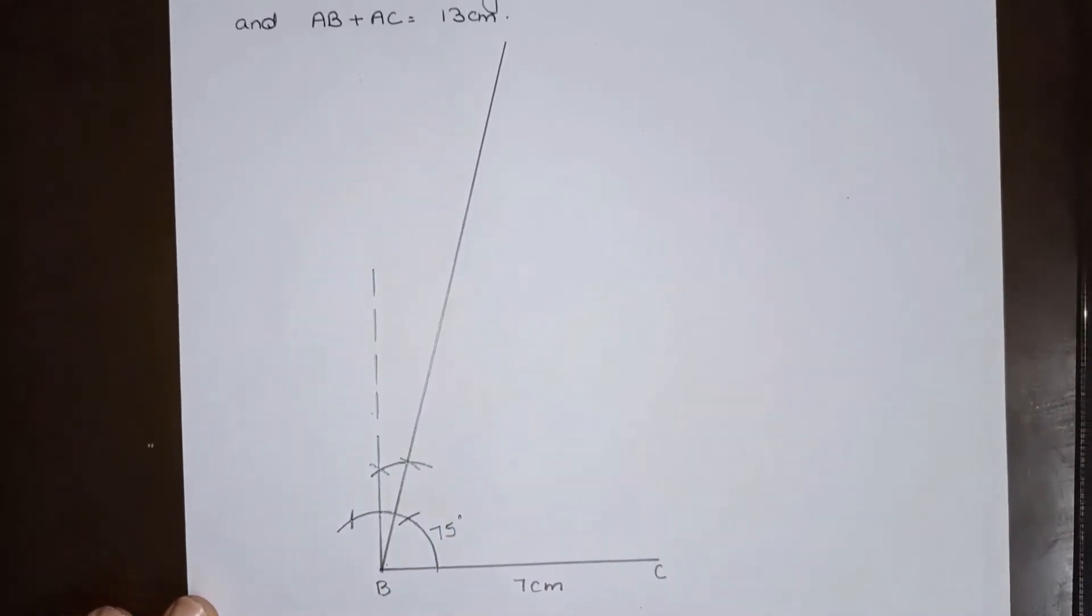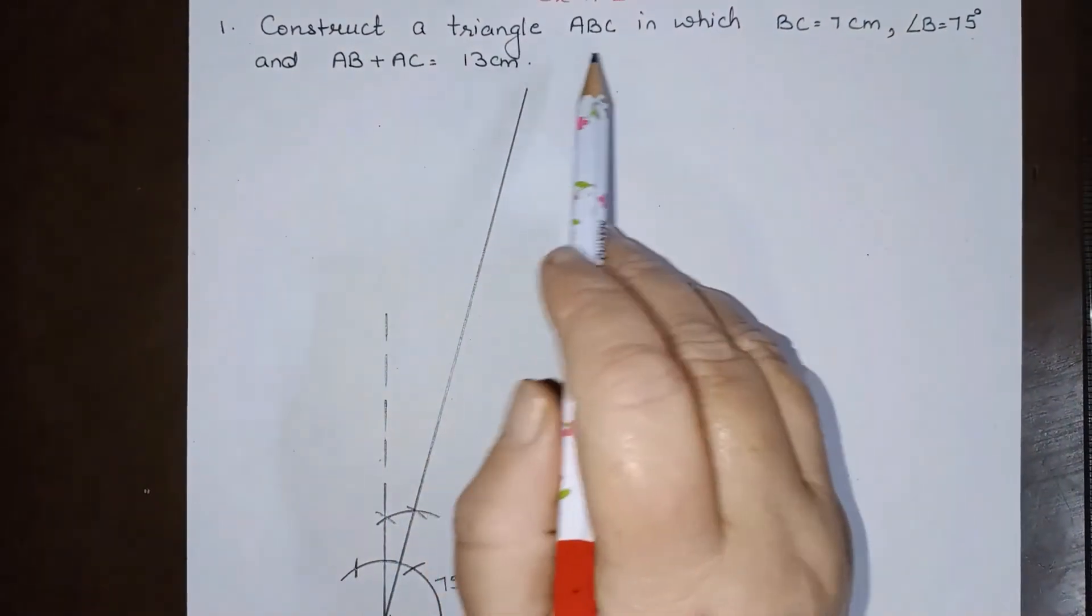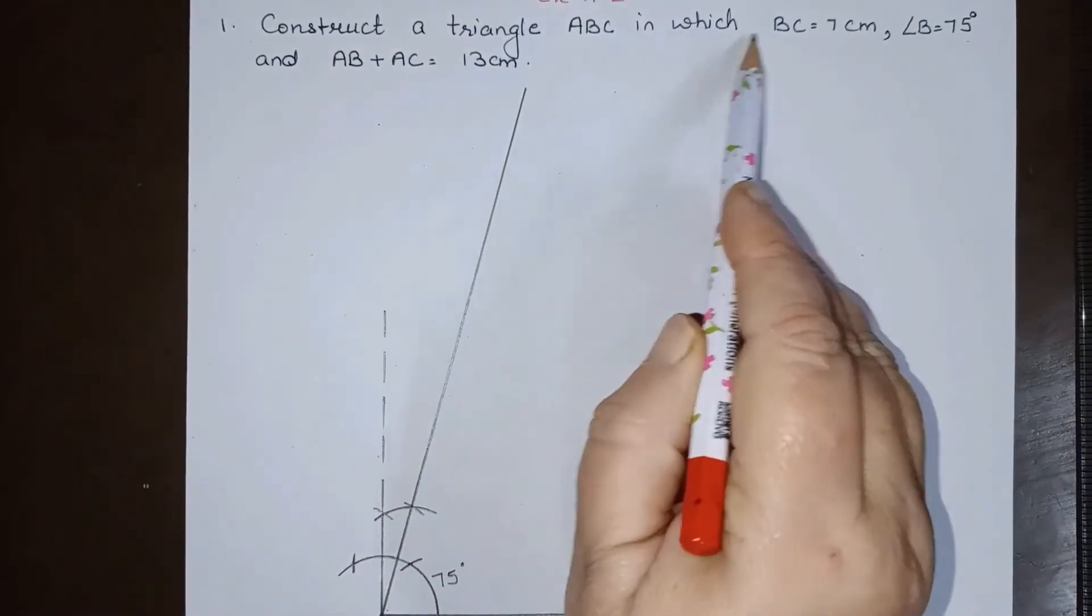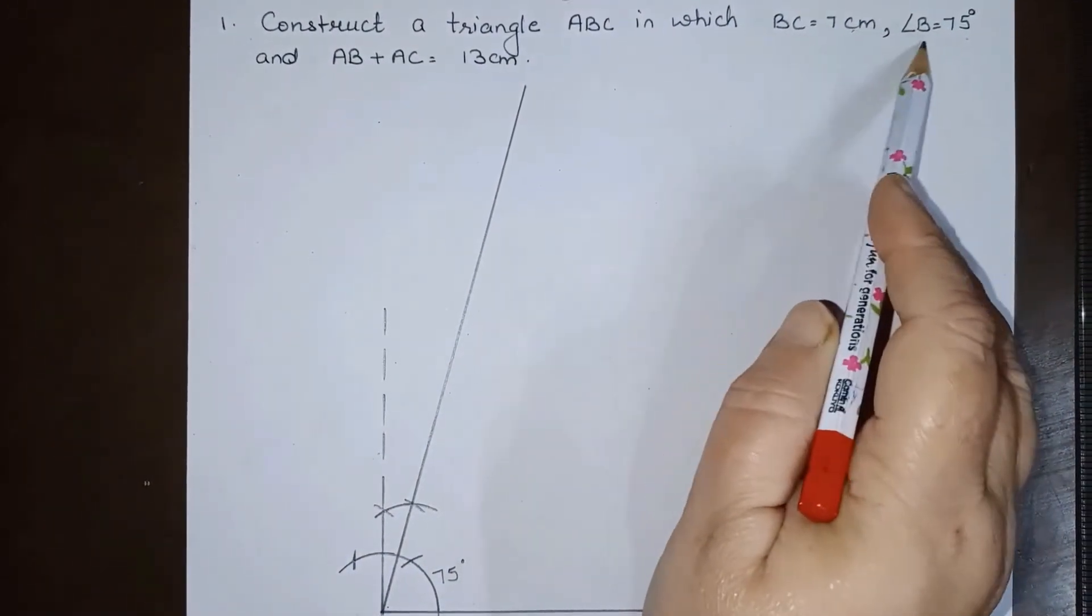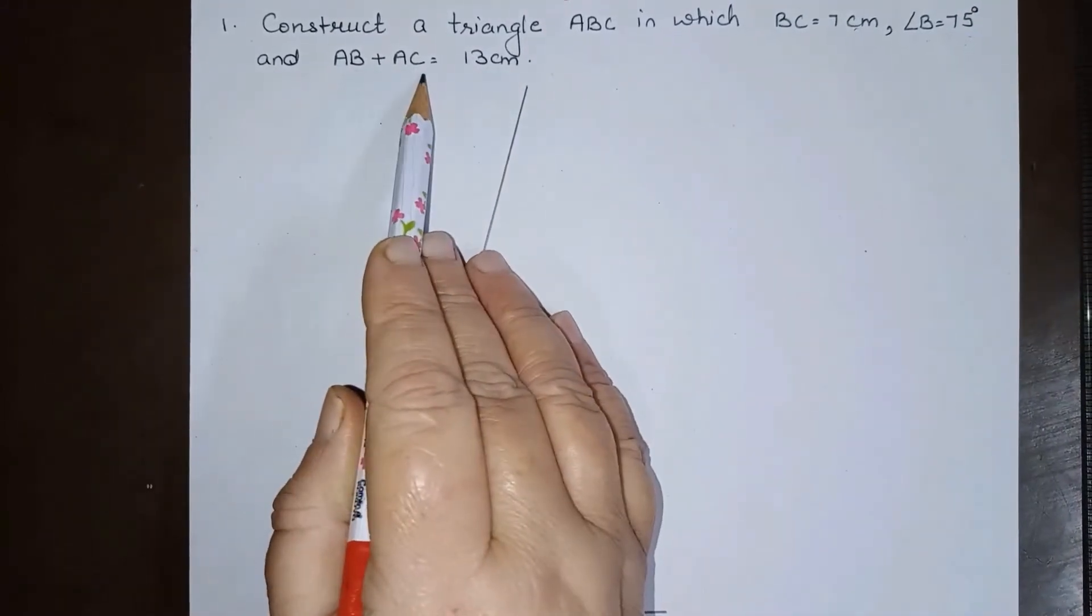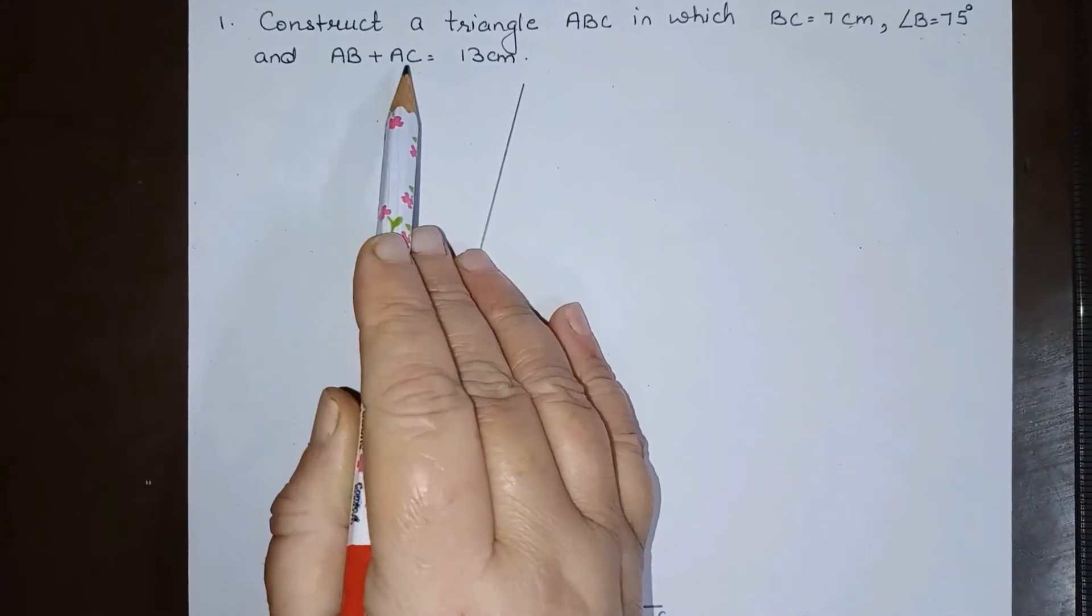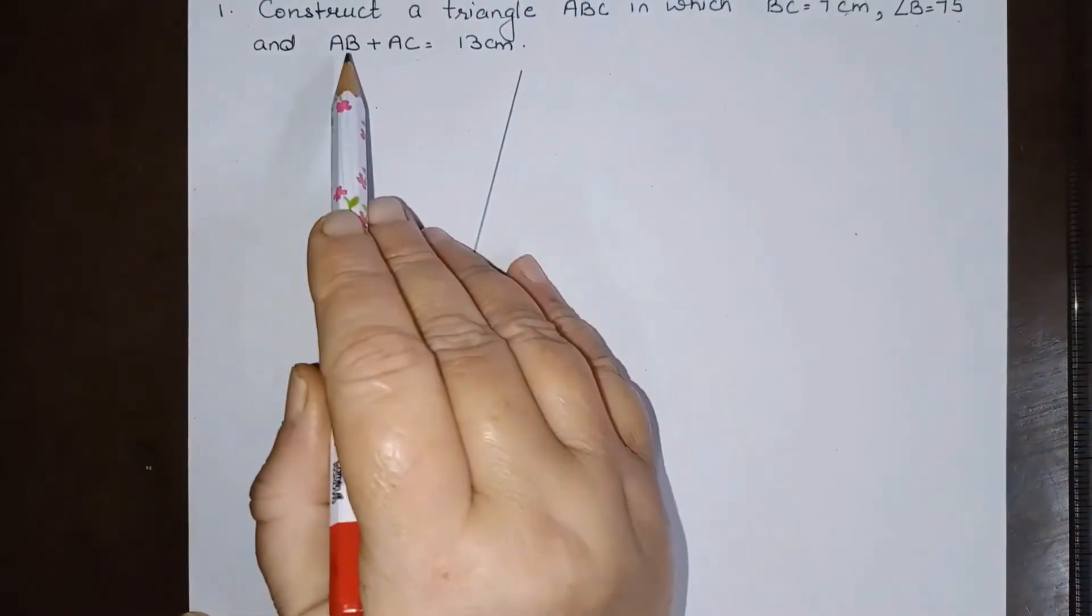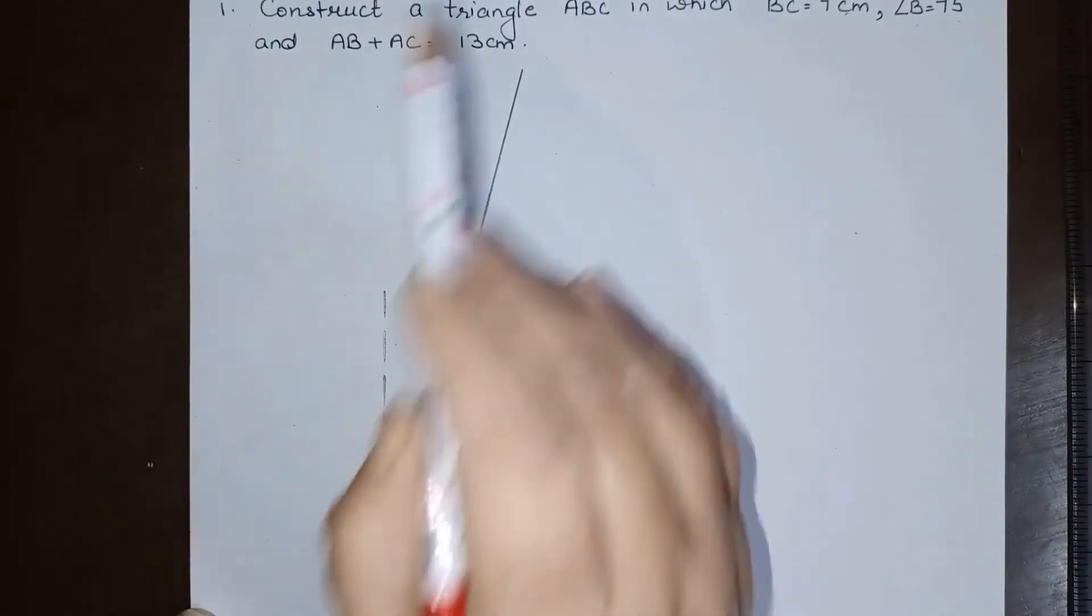Now next, if you will see the question once again, we have to construct a triangle ABC in which BC is 7 cm, angle B is 75 degrees, and the sum of the other two sides, the other two sides which are different from the base, the sum of the other two sides is 13 cm.